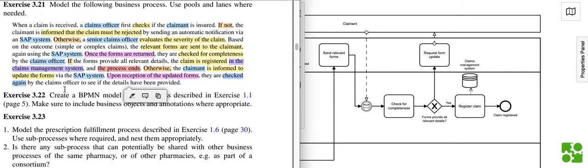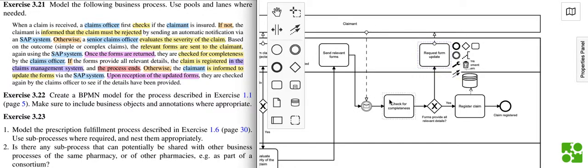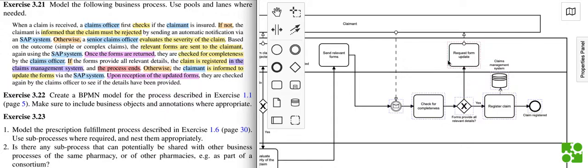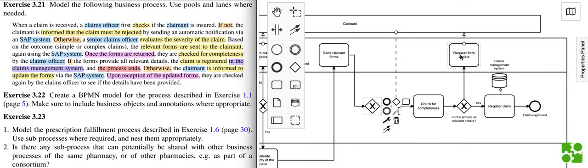They are checked again by the claims officer to see if the details have been provided. It seems we can use the structure we already have, so I'm going to rearrange this to use a loop join here. And I think that's it.